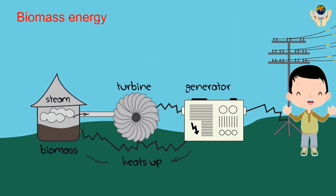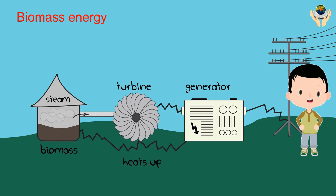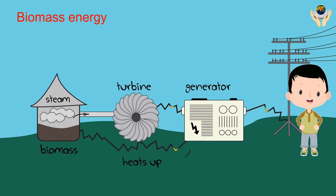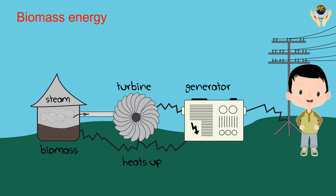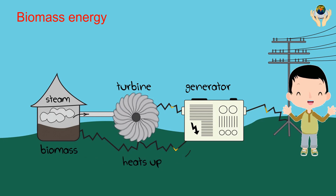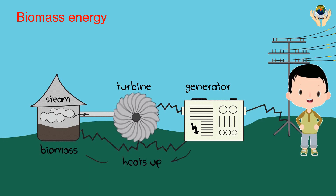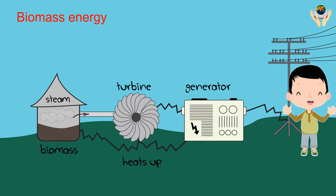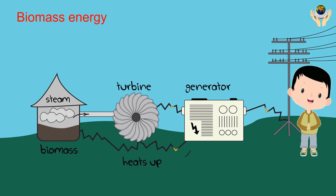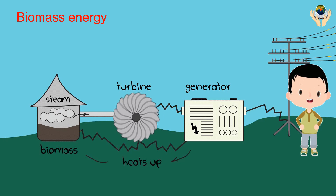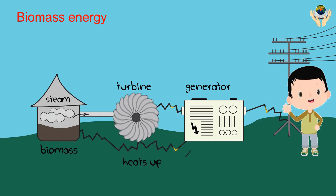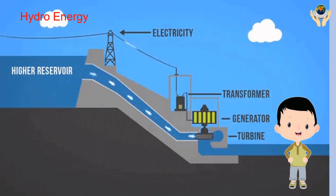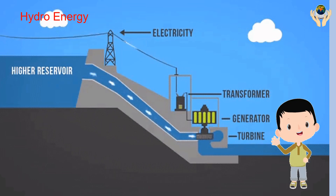We use biomass energy to heat up water. The water creates steam, and the steam runs the turbine. The turbine runs the generator, and the generator provides the electricity.